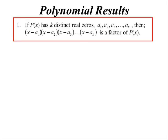Some polynomial results. Our first one simply says this: if you've got a polynomial and it's k distinct, so different, real zeros, a1, a2, a3 up to ak, then you know whatever (x-a1)(x-a2)(x-a3)...(x-ak) is a factor.